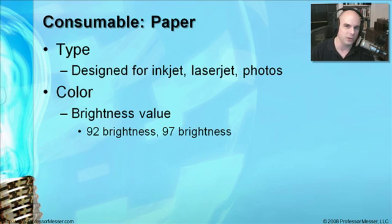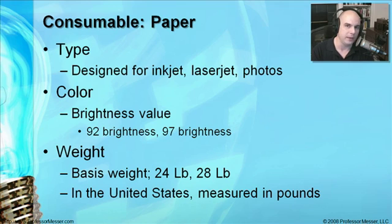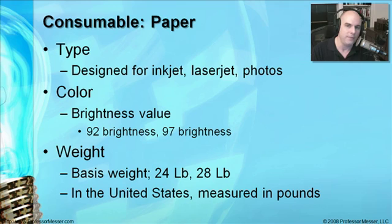Another characteristic of paper is weight — literally the weight or thickness of the pieces of paper. The higher the weight, the thicker and heavier the paper. You'll see something called a basis weight: a 24-pound paper, a 28-pound paper. This quite literally refers to the large size of paper before it's cut into smaller reams. In the United States, we measure this in pounds, and as the numbers go up, the heavier the paper gets.